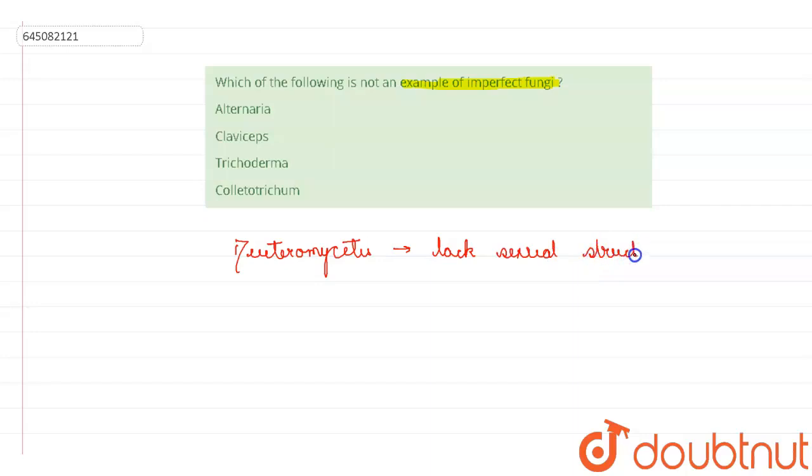That is why they are known as imperfect fungi and they come under this Deuteromycetes. Now if you talk about this Deuteromycetes or Deuteromycota, they mainly live on land.